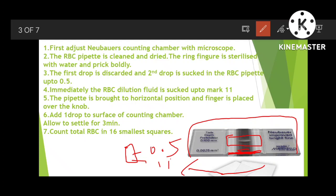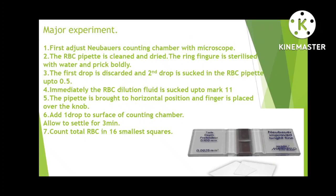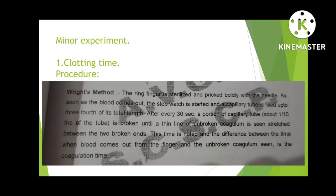Count the RBC in 16 smallest squares. You repeat this for four sets of 16 squares in the RBC count. That concludes the major experiment.